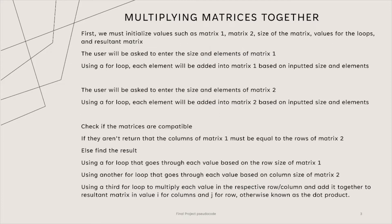After this is done, the user will be asked to enter the size of the second matrix. We will follow all of the same steps as the first matrix to type in all of the elements depending on its size, and use a loop to add each element in its corresponding spot in the matrix. Next we must check if the matrices can be multiplied together. If they aren't compatible, then we must tell the user that the columns of the first matrix aren't equal to that of the second matrix.